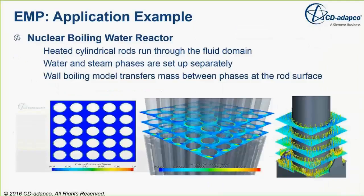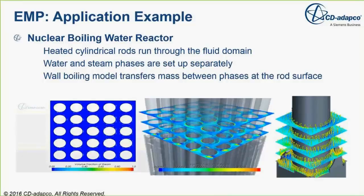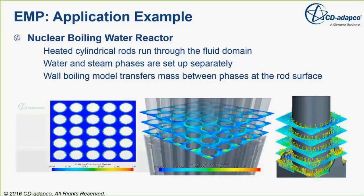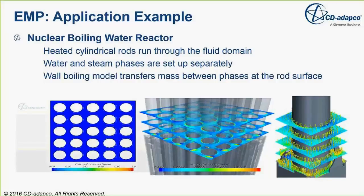A typical application of the EMP capability is a nuclear boiling water reactor. Here you see a five-by-five sub-assembly of a nuclear reactor where there are 25 fuel rods. Flow rises through the fuel rods, gets heated, and steam is produced. The water phase and steam phase can be separately defined, and their motion and energy exchange can be tracked and accounted for.